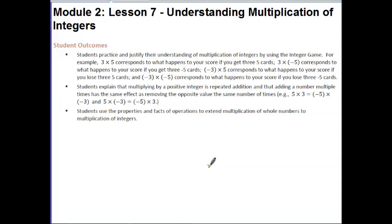Hi guys, this is Ms. Goal. Today's lesson is Module 2, Lesson 7: Understanding Multiplication of Integers. Your outcomes for today are: students practice and justify their understanding of multiplication of integers by using the integer game; students explain that multiplying by a positive integer is repeated addition, and that adding a number multiple times has the same effect as removing the opposite value the same number of times; and students use the properties and facts of operations to extend multiplication of whole numbers to multiplication of integers.